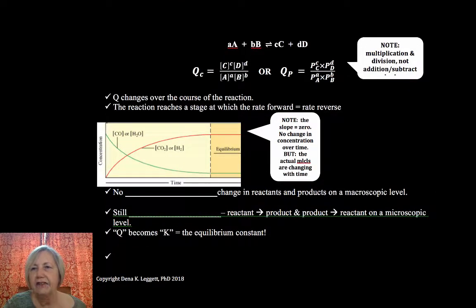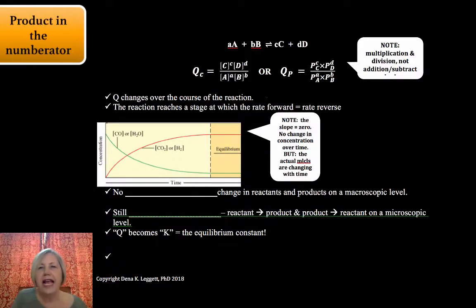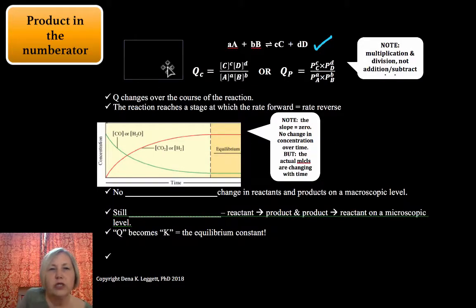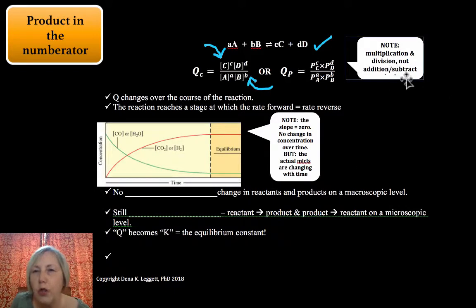So let's continue on this reaction quotient. And if I have some generalized balanced equation here, what scientists have chosen to do is to define it as products in a numerator and reactants in the denominator. And notice that this is all multiplication and division. We're not going to be doing subtraction and addition for these reaction quotients. It's all multiplication and powers.